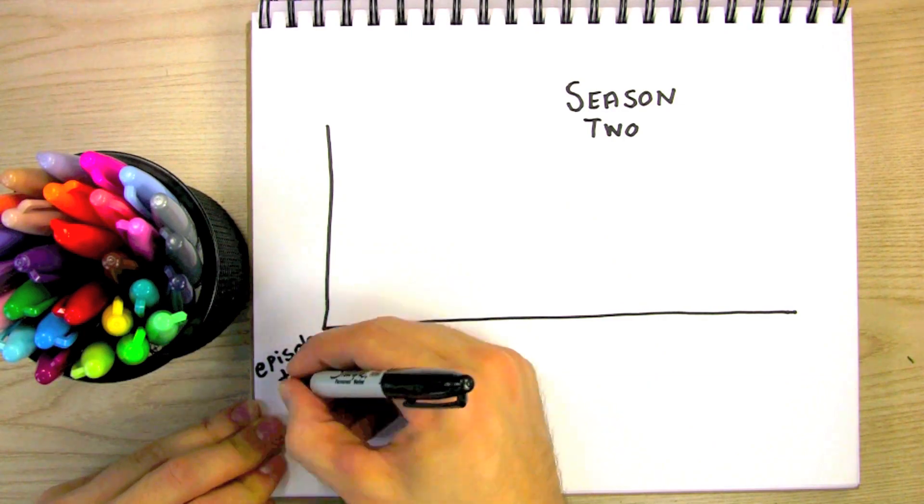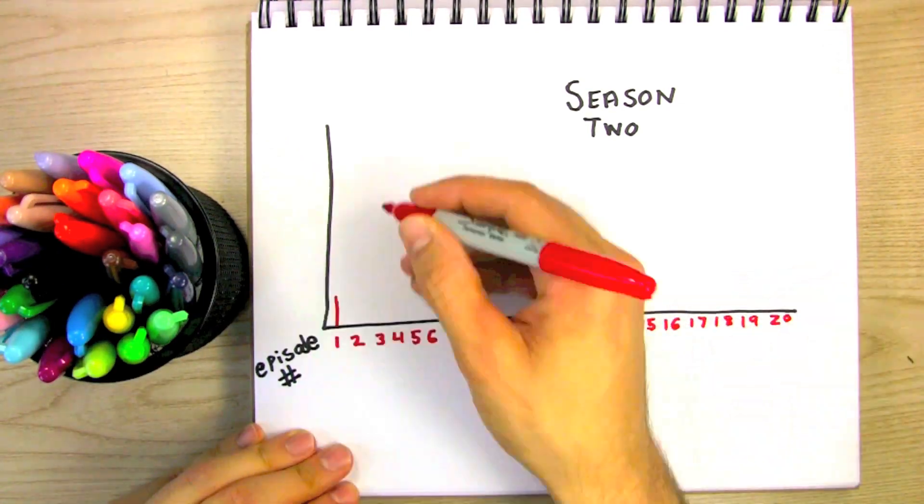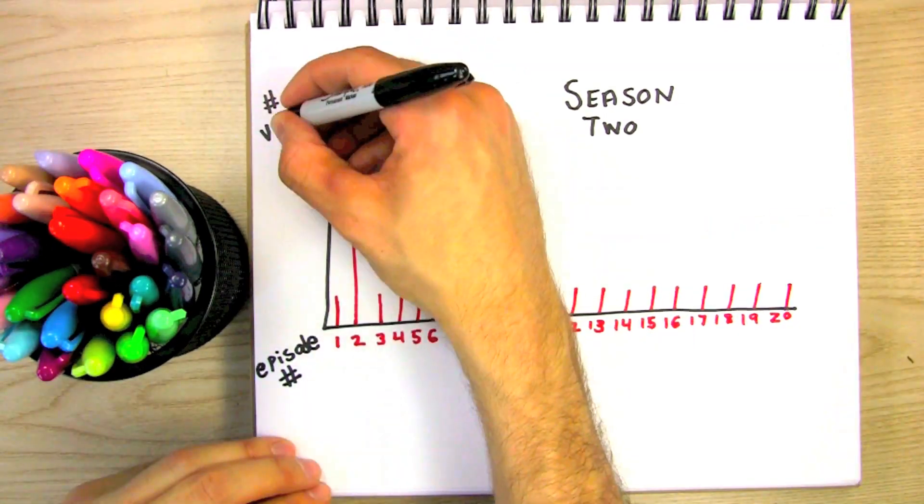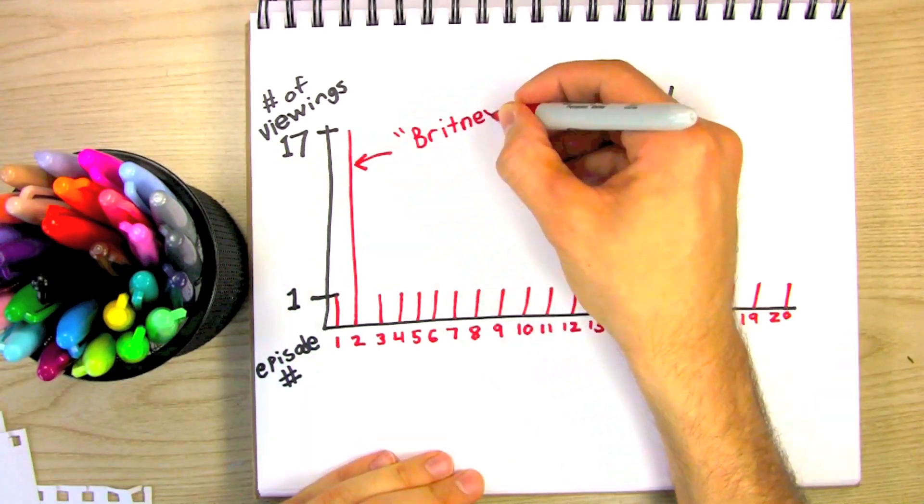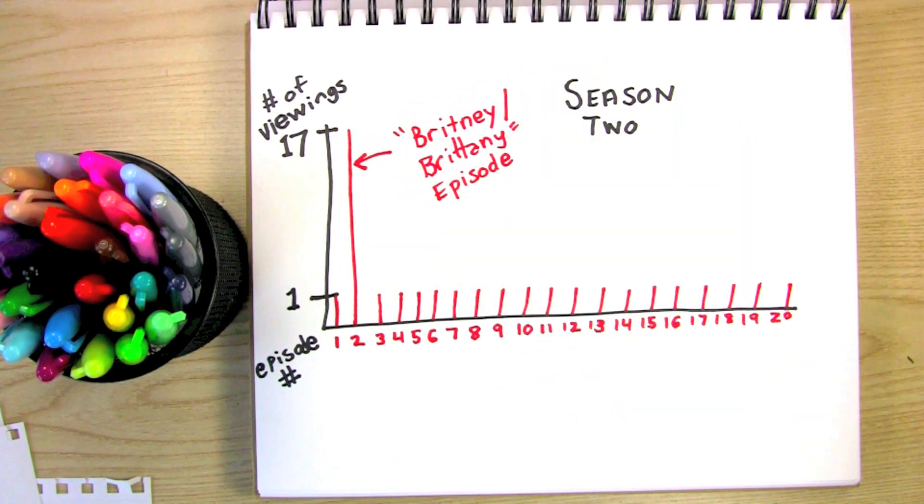This is a histogram showing the number of times I've watched each episode of Glee Season 2. As you can see, episode 2 was my, shall we say, favorite.